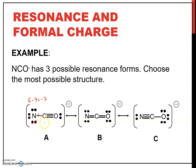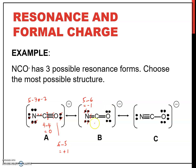For carbon in structure A: 4 valence electrons minus 1, 2, 3, 4 electrons owned, so 4 minus 4 is 0. For oxygen in structure A: 6 valence electrons minus 1, 2, 3, 4, 5 electrons owned, so 6 minus 5 is plus 1. For structure B, nitrogen: 5 minus 1, 2, 3, 4, 5, 6 gives 5 minus 6 equals negative 1. Carbon in structure B: 4 minus 1, 2, 3, 4 equals 0.